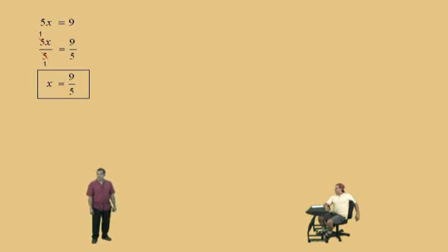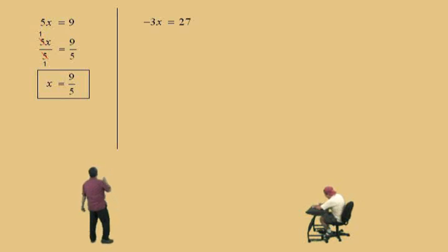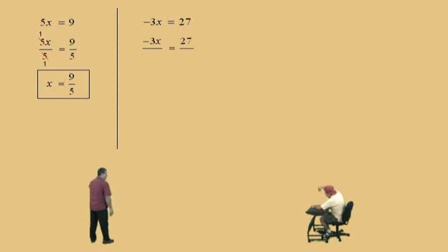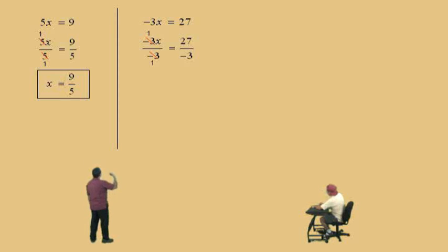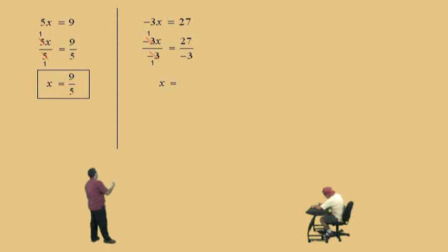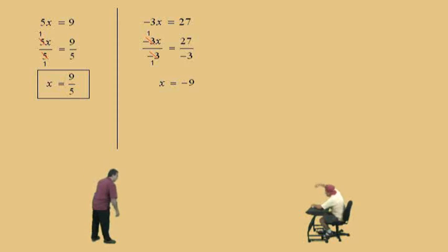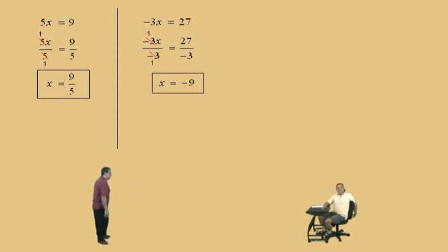Here we go: negative 3x equals 27, Charlie. What do we do to both sides? Divide by negative 3. That's right. Negative 3 divided by negative 3 reduces to 1 over 1, giving us our 1x on the left, and the right-hand side is 27 divided by negative 3. What is it, Charlie? Negative 9. Very nice, negative 9. And that is our answer.